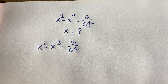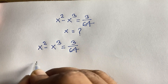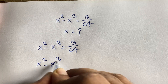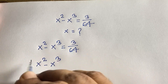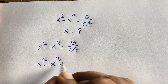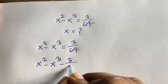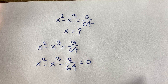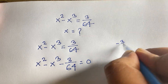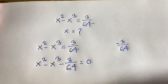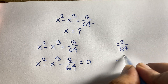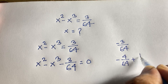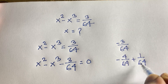So here we have x squared minus x cubed. I move this term to the left side, so minus 3 over 64 equals 0. Now I can see that minus 3 over 64 can be written as minus 4 over 64 plus 1 over 64.